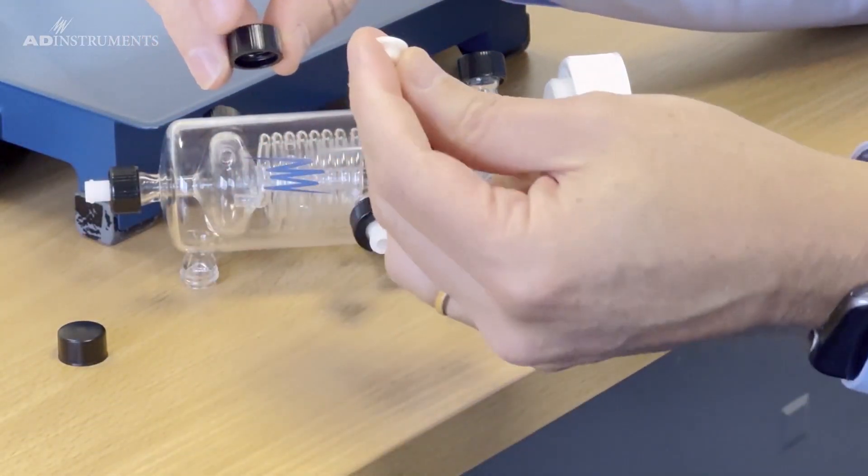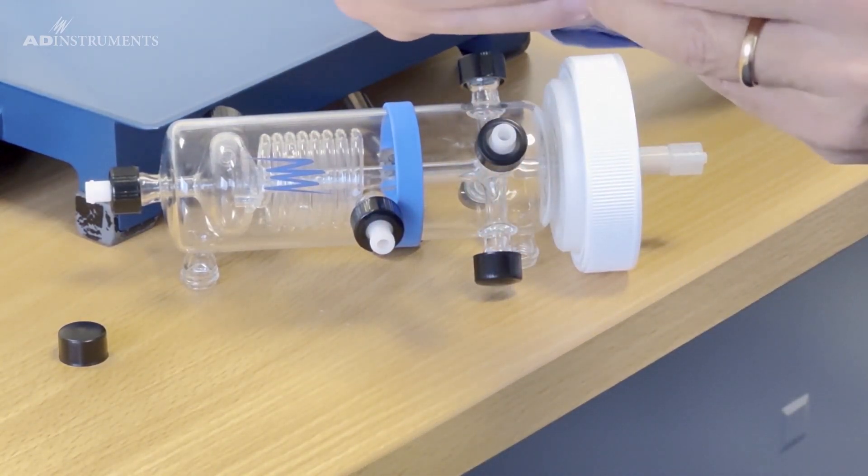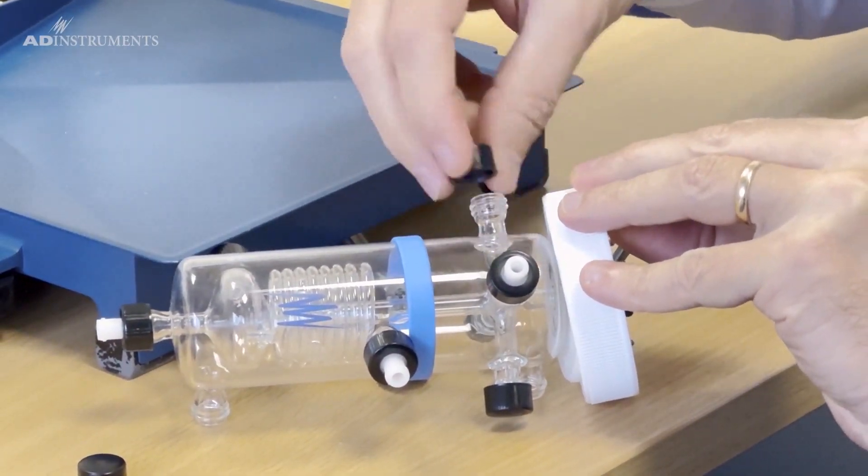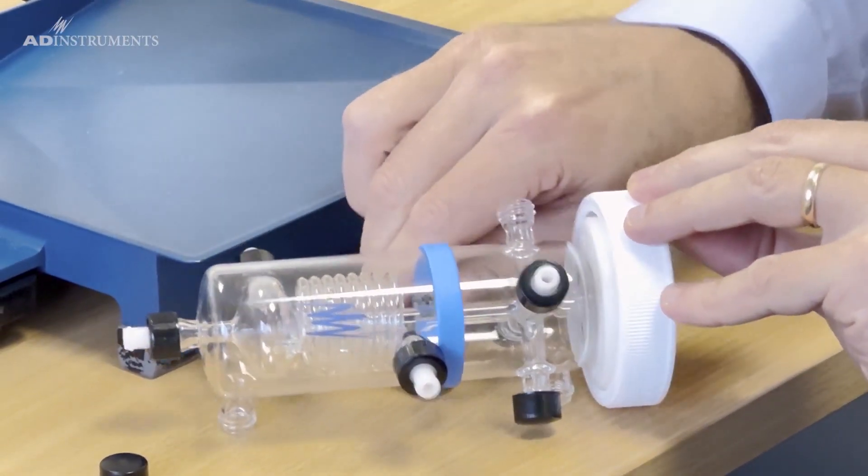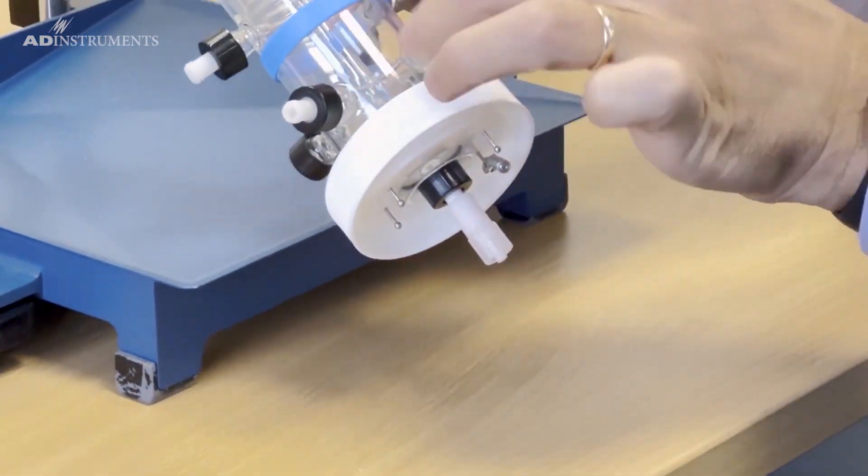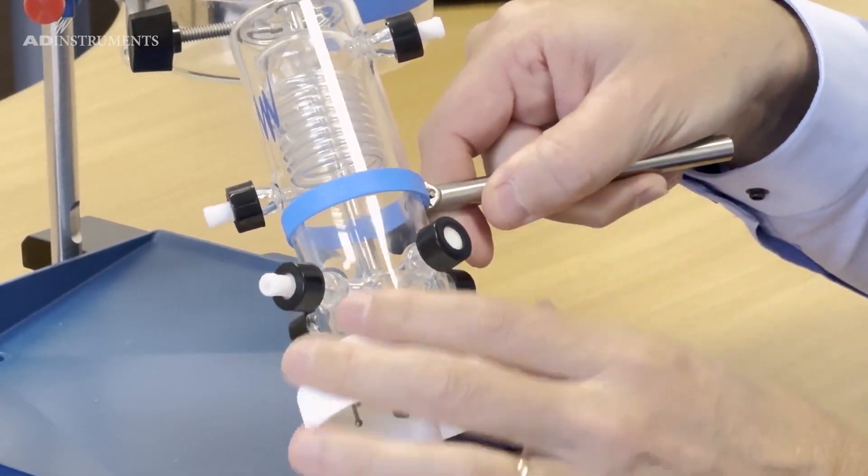We also have these little rubber septa which you can put into one of these caps too. This is ideal for applying a drug through a syringe, so you can put the needle through the septum to apply the drug.